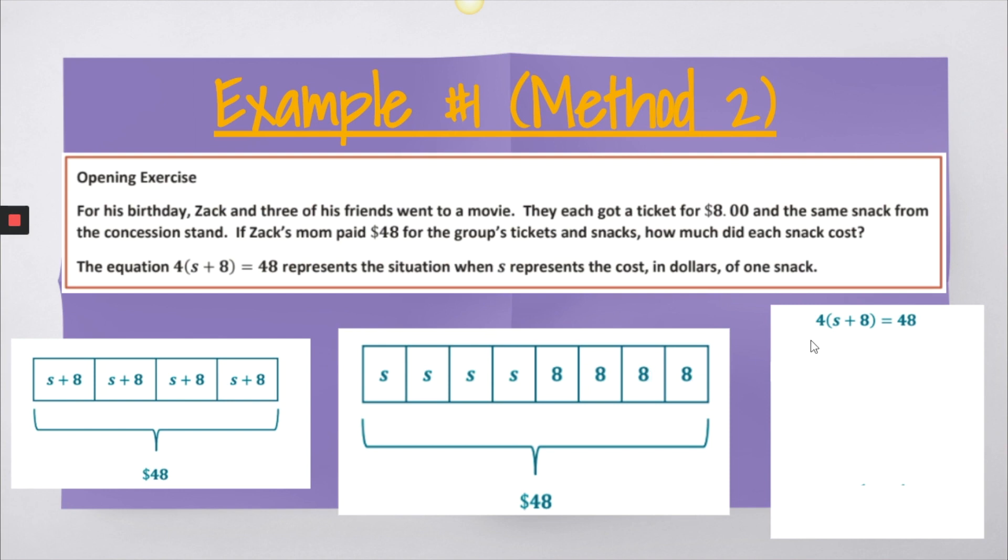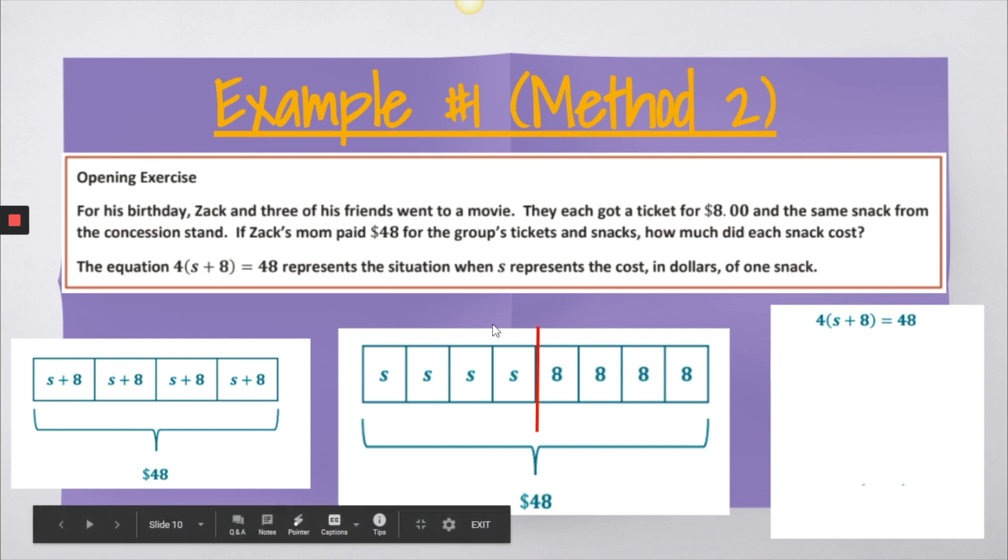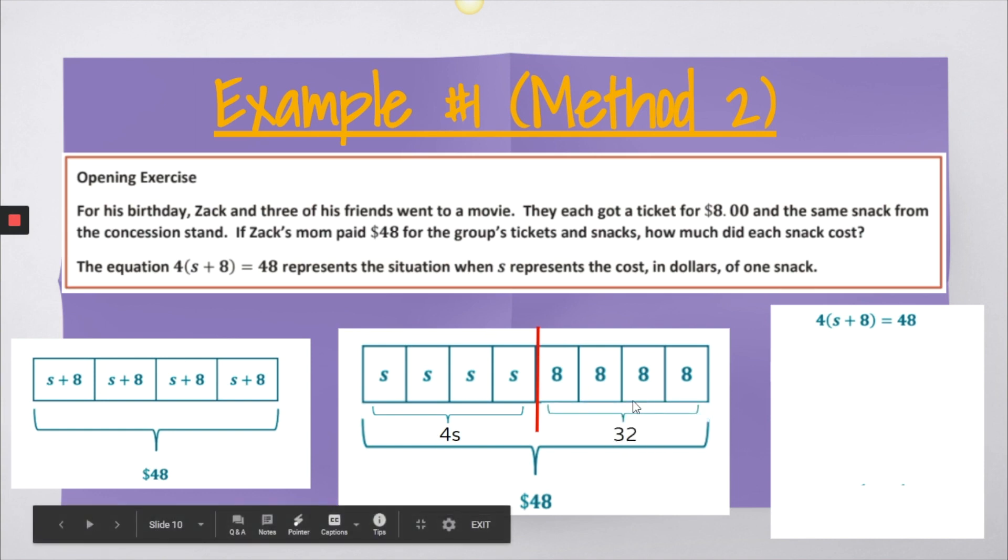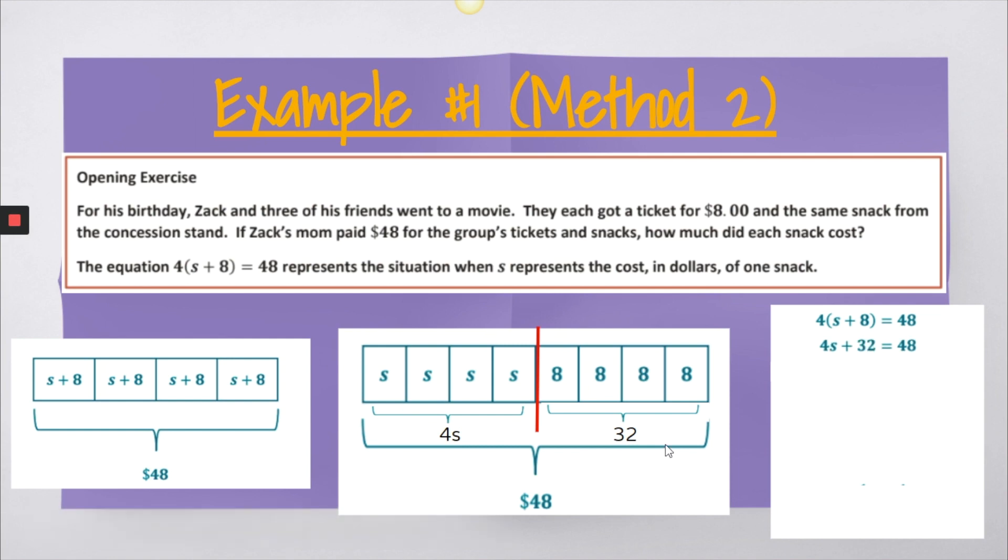Now, if this is set up with the distributive property, the first thing we're going to see is that we can chunk or place these like terms together and place these like terms together as well. So here you have 4S and this side is 32.